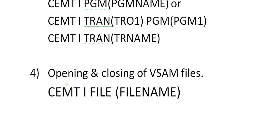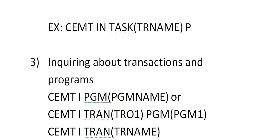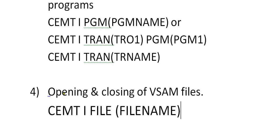Another functionality is the opening and closing of VSAM files. In CICS, we mainly work with VSAM files — we don't use flat files. Opening and closing of VSAM files can be done with CEMT I FILE and the file name. Once you enter this command, you get a set of options and you can select open or close, among various other operations. I will be showing this practically in the next tutorials — all these things once we create a map, program, and everything. Since this is a theoretical part, I am explaining everything theoretically.